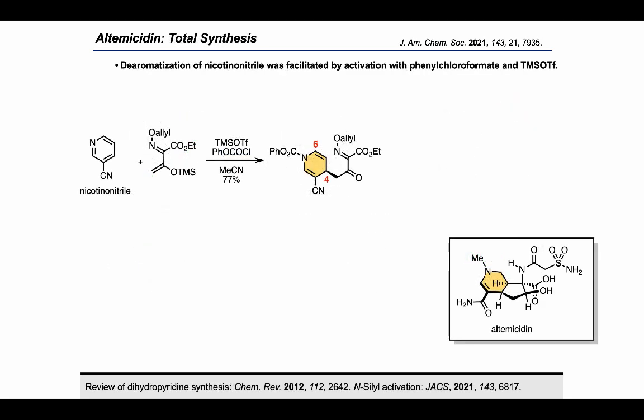This problem was abated by the use of chloroformates, which gave the corresponding N-carbamate dihydropyridines. The electron-withdrawing nature of the carbonate sufficiently stabilizes the dihydropyridine and avoids undesired enamine reactivity. After extensive optimization, we determined that phenyl chloroformate was necessary to achieve selectivity for the C4 carbon over that of C6. We also found that use of trimethylsilyl triflate additive in 10 mol% was key to this reaction.